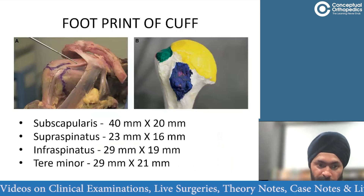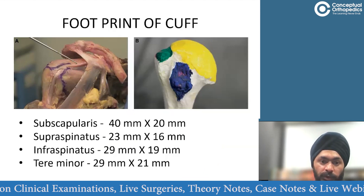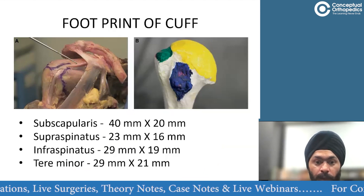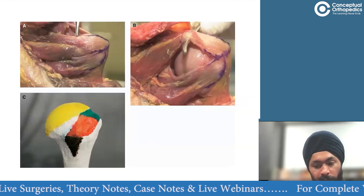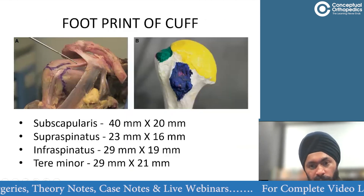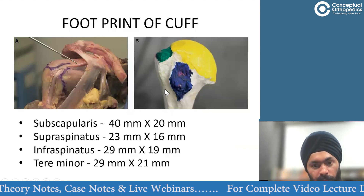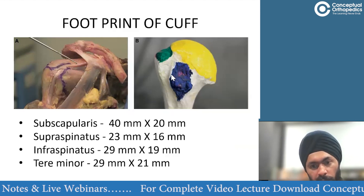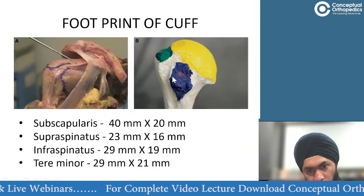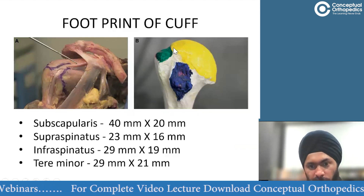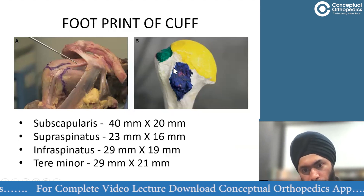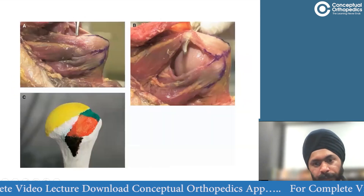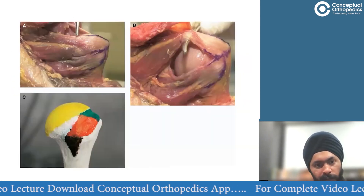Then there's your infraspinatus, and supraspinatus is actually one of the smallest muscles of the rotator cuff. Supraspinatus, infraspinatus, and teres minor attach on the greater tuberosity, and subscapularis on the lesser tuberosity. The biggest footprint is on the lesser tuberosity for subscapularis, though a few supraspinatus fibers do also attach to the lesser tuberosity.